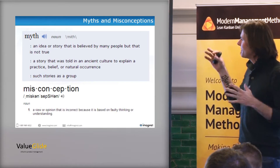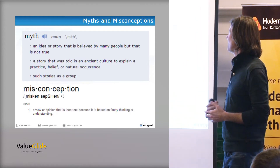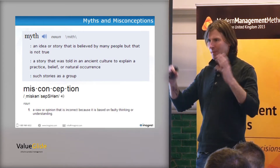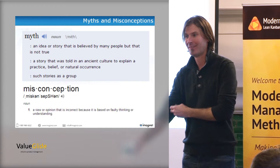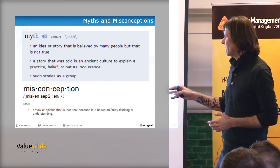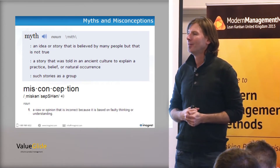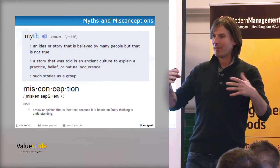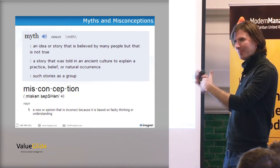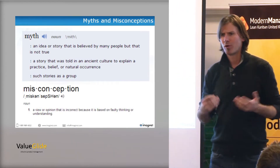A little bit about myth and misconception — I've been using those words. A myth is an idea or story that is believed by many people but that is not true. If a whole bunch of people in this room believed that the sky was green, that would be a myth. A misconception is slightly different: a view or opinion that is incorrect because it is based on faulty thinking or understanding.